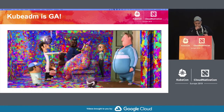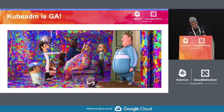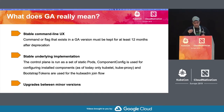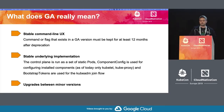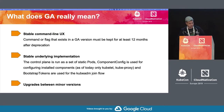Kubeadm is GA - General Availability - meaning we are stable. Stability means we have a stable command line UX. If you're already using kubeadm in your infrastructure, we guarantee we're not going to break the command line. When we deprecate something we have to keep it around for 12 months - that's the GA deprecation policy of Kubernetes and we are following it.